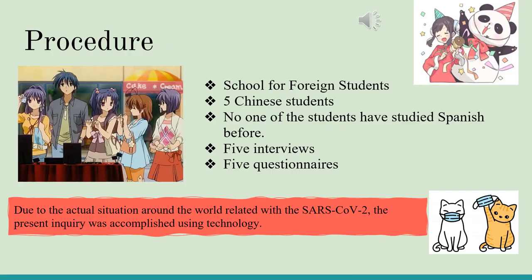The participants in this investigation were selected from a group of students at the school for foreign students who were learning Spanish as a second language. The participants were university students of the Chongqing National University of China, who were exchange students in Xalapa, Veracruz. All of the participants speak English; two of them have a language certificate, and the age range is between 21 and 25 years old. None of them had studied Spanish before university; two have a Spanish language certificate at A1 according to the European framework, and one student has a B2 certificate.